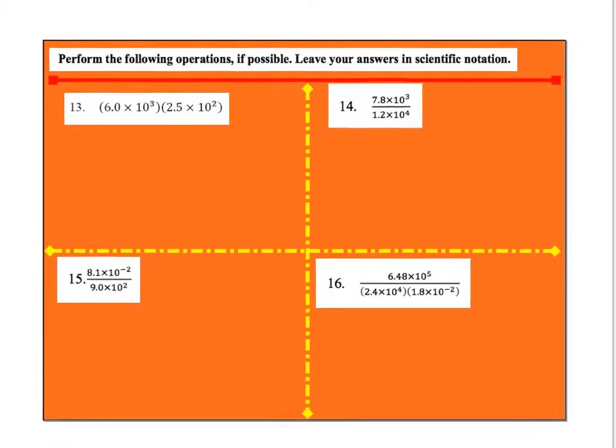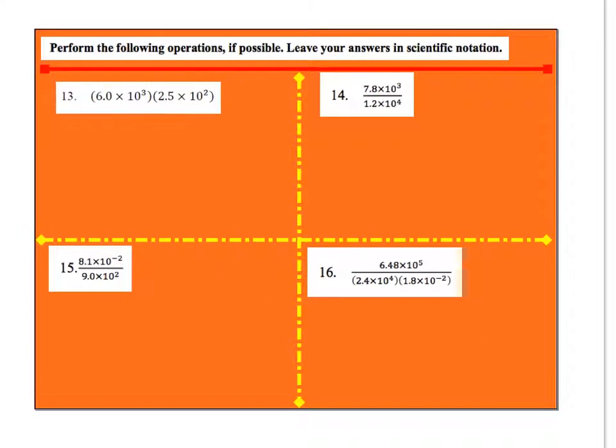Performing operations and leave my answers in scientific notation. For number 13, I'm going to multiply. So I'm going to take 6 times 2.5, so that's going to give me 15. 10 to the third, 10 to the second, add those two so I get 10 to the fifth. But my coefficient is now bigger than 10, I can't have that. So all I do is I move this over 1 so it becomes 1.5, and I add 1 up here so this becomes 10 to the sixth.